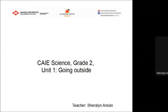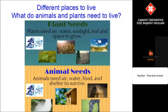Hello and welcome to Grade 2 Science, Unit 1: Going Outside. Different places to live — what do animals and plants need to live? Plants need air, water, sunlight, soil and space to grow. Animals need air, water, food and shelter to survive.